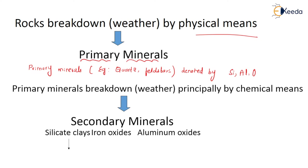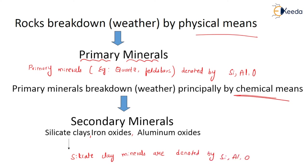Again further, primary minerals are broken down by weathering with the help of chemical means. They are known as secondary minerals. Generally silicate clays, iron oxide, and aluminium oxides are the examples. Silicate clay minerals are denoted by Si, Al and O. So the rocks which break down with the help of physical means form primary minerals. Again, these primary minerals break down with the help of chemical means, and then secondary minerals are formed.